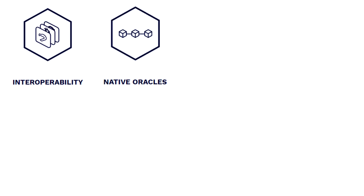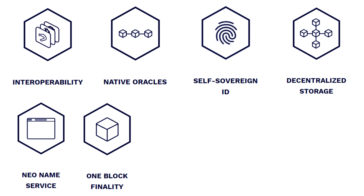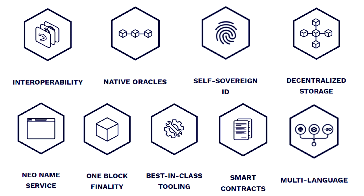The goal of the NEO 3 upgrade was to make it the best all-in-one solution — the number one in every category for platform use, development, and creation. There are nine things that make NEO such a great all-in-one smart contract platform: interoperability, native oracles, self-sovereign ID, decentralized storage, NEO name service, one block finality, best-in-class tooling, smart contracts, and multi-language support for developers.